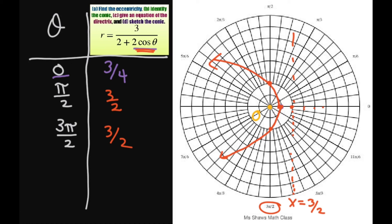You would write this as 3 fourths comma 0 in polar form. Also, this is our vertex because it's the midpoint between our directrix and our origin. And that's it.